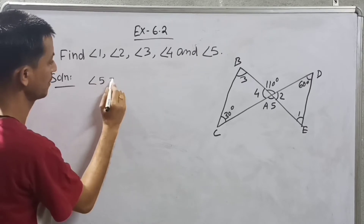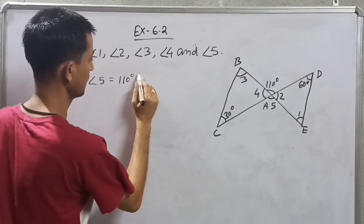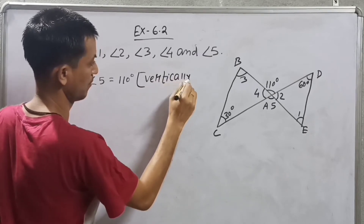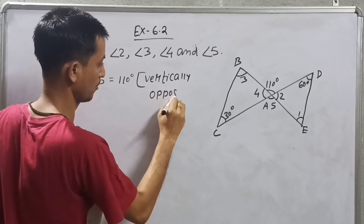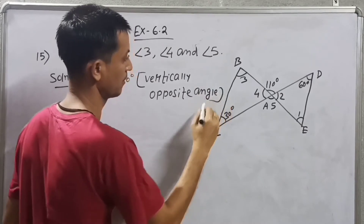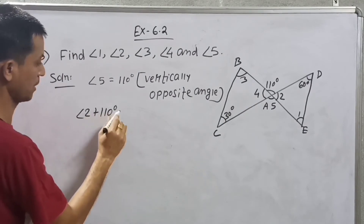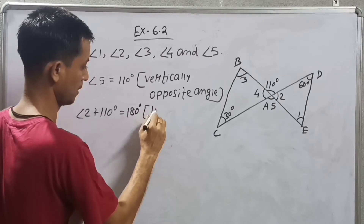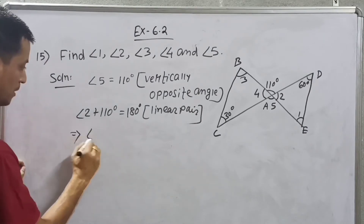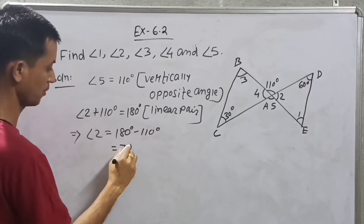Angle 5 is equal to 110 degrees. Vertically opposite angle: Angle 2 equals 110 degrees. Linear pair: therefore Angle 2 equals 180 degrees minus 110 degrees, which is equal to 70 degrees.